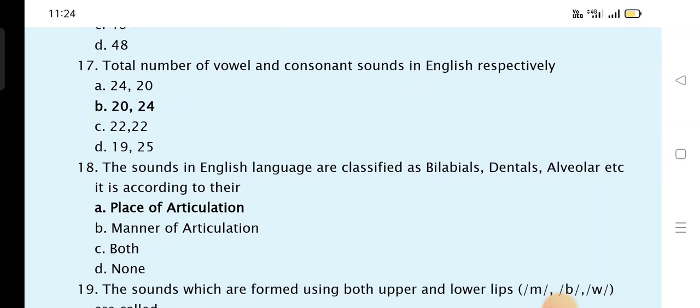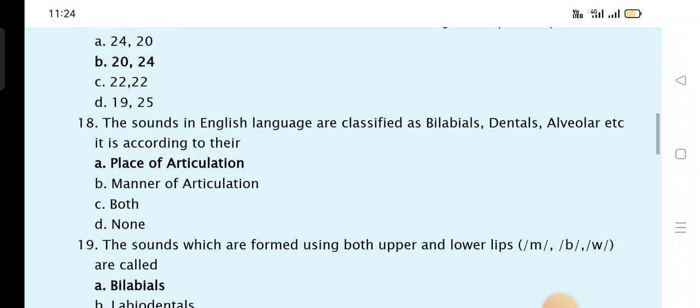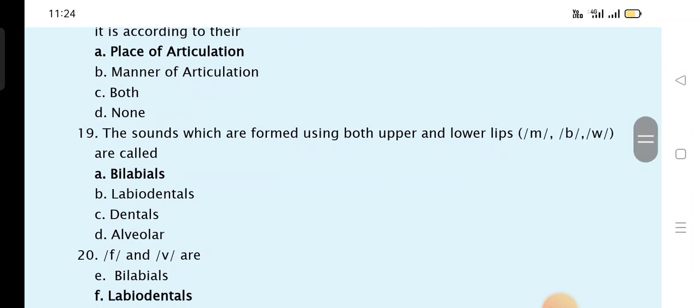The sounds in English language are classified as the bilabial, dental, alveolar, etc. It is according to their place of articulation. The sounds which are formed using both upper and lower lips, M, B, and W are called bilabial.